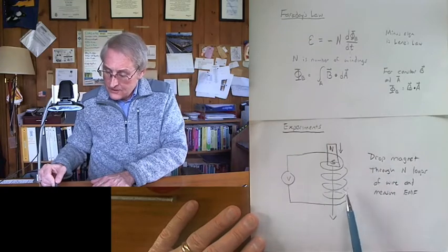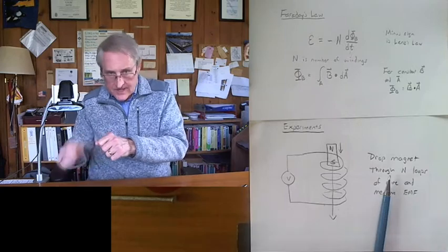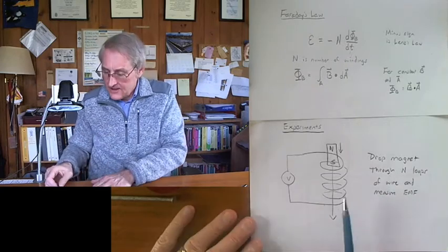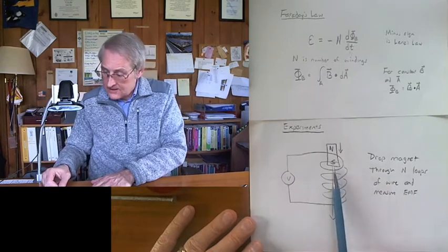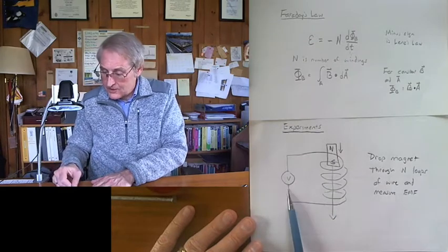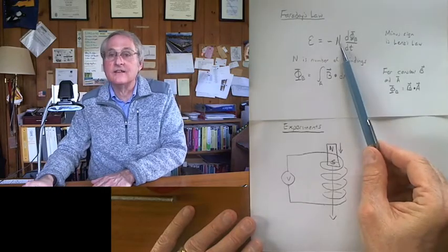The other thing we can do is we can add more wire. So we'll start with 20 windings of wire or so and then add another 10 and another 10 and another 10. Each time I'll drop the magnet, the same magnet from the same height to get the same speed and we'll measure the voltage and see what happens. So we'll change N in the equation.